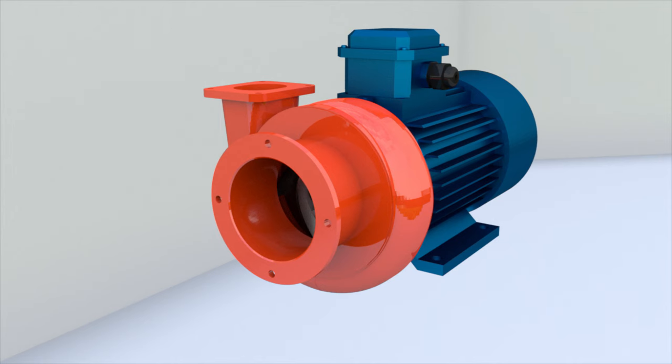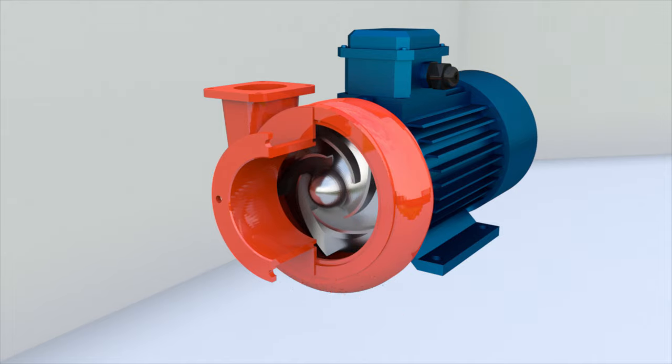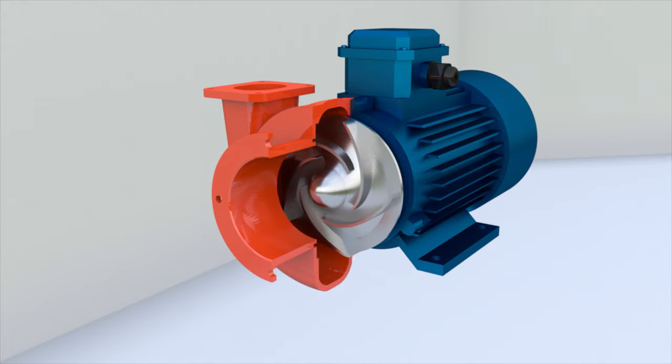If bearings support only one side of the shaft, the pump is called a cantilever pump. It is a versatile design that is used in small and medium-sized pumps.